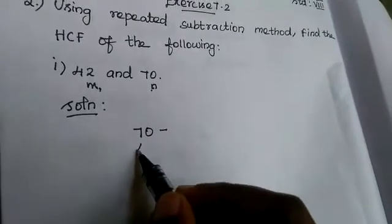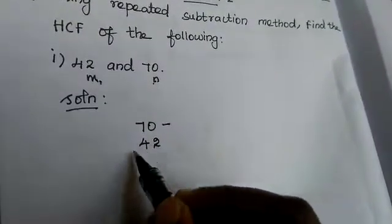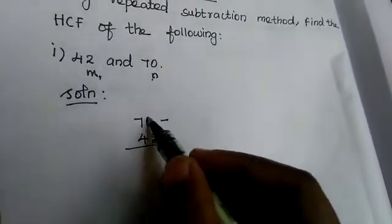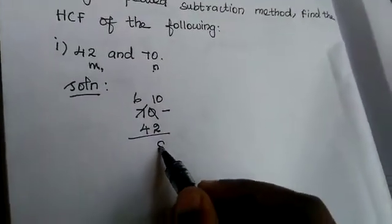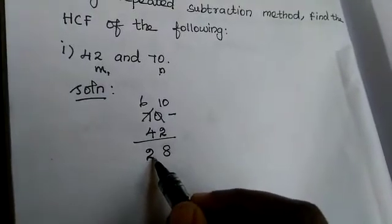70 minus 42. Now subtract. Can you subtract 0 from nothing? No. So we borrow from 7. This became 6. This became 10 minus 2, 8. 6 minus 4, 2.